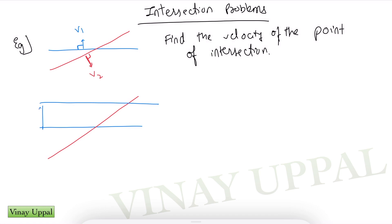So initially suppose I have the blue line here and the red line here. In time dt, the blue line will go up by v1 dt and the red line will travel a distance v2 dt in this manner.